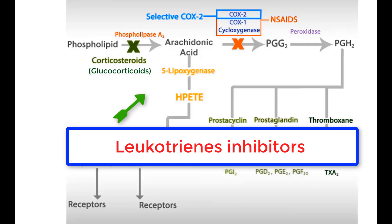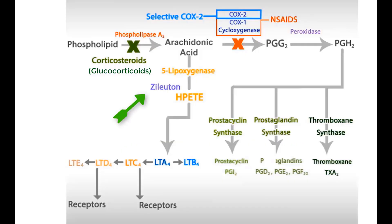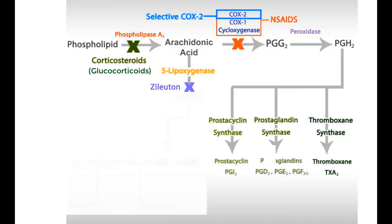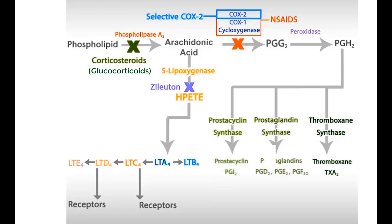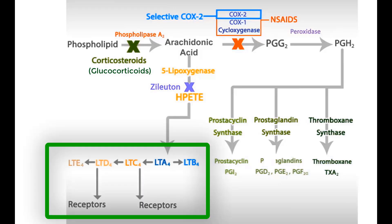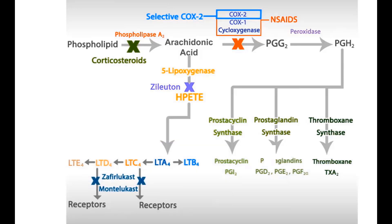Looking at the leukotriene pathways, you will notice that the drug zileuton interferes with the 5-lipoxygenase enzyme, thus inhibiting the production of all inflammatory leukotrienes. Finally, zafirlukast and montelukast drugs are selective competitive inhibitors of leukotriene C4, D4, and E4 receptors.